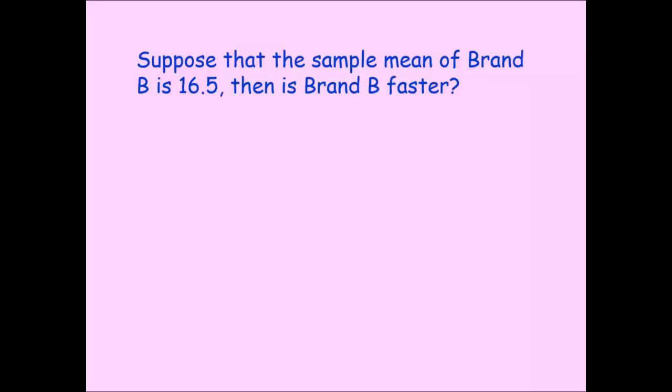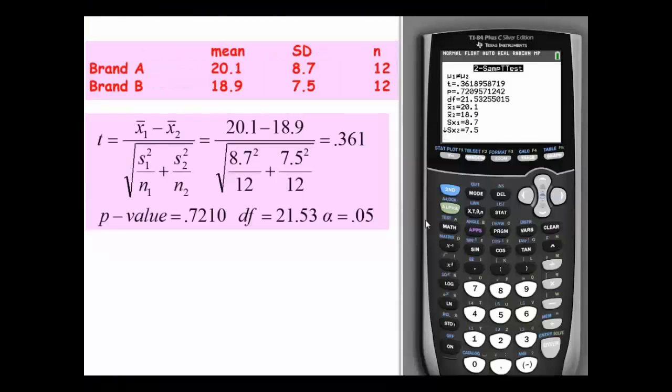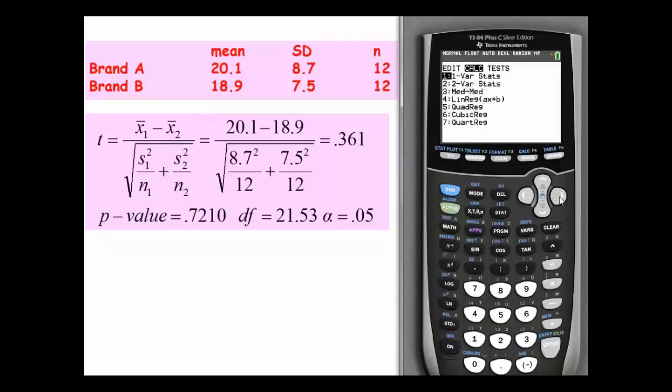Okay, so the nice thing is we're going to go right back to our calculator and we're just going to update the mean for brand B to 16.5. Okay, and this actually was the same screen I had up a second ago. So, I'm going to go to stat, arrow over to tests, go down to the two sample t-test, which on mine is number four, and then we said we're going to switch the mean of brand B from 18.9 to 16.5 and see if that actually makes a difference in the rest of the calculations.